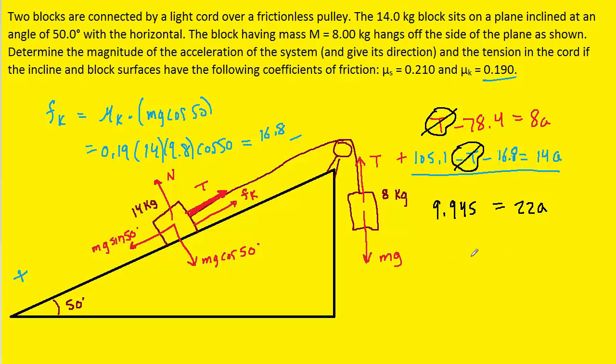And then we can just divide both sides of this equation by 22. And when we do that we get 0.452 approximately meters per second squared. So this is the correct answer for the magnitude of the acceleration.